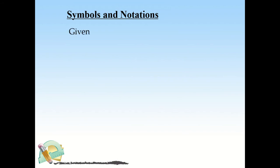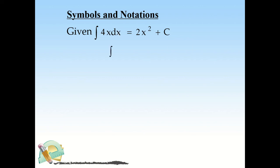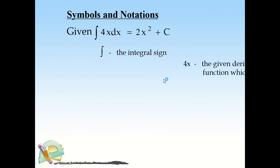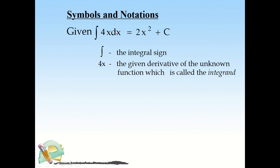For symbols and notations, we have the integral of 4x dx equal to 2x² + C. The integral sign indicates that we are summing up small things to come up with a big thing. The function 4x, between the integral sign and dx, is the given derivative of the unknown function — this is called the integrand.